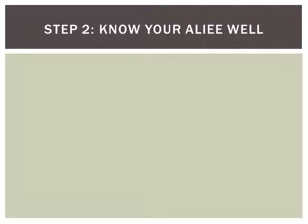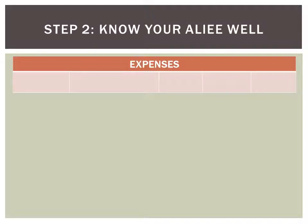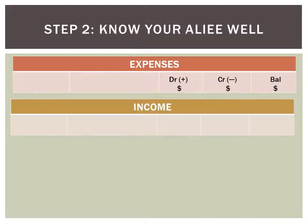Step two: you need to know your ELLE very well. ELLE stands for assets, liabilities, income, and equity, as well as expenses. For expenses and income pertaining to this chapter, you must know the debit/credit rules. For expenses: to debit is to plus, to credit is to minus. For income it is the direct opposite: to debit is to minus, to credit is to plus. Then you have your running balance.